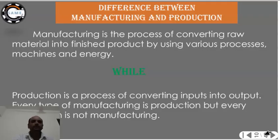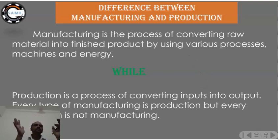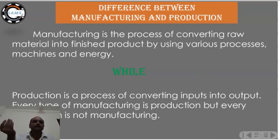Now we will see the difference between manufacturing and production — this question is often asked in interviews. Manufacturing is the process of converting raw material into finished products using various processes, machines, energies, and utilities. Production is a broader concept — it is the process of converting input into output.